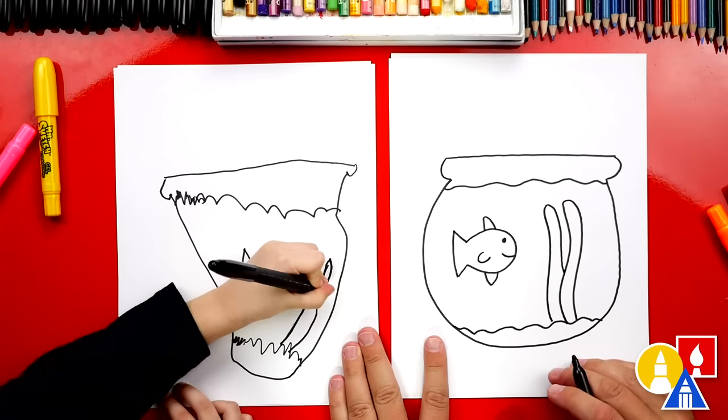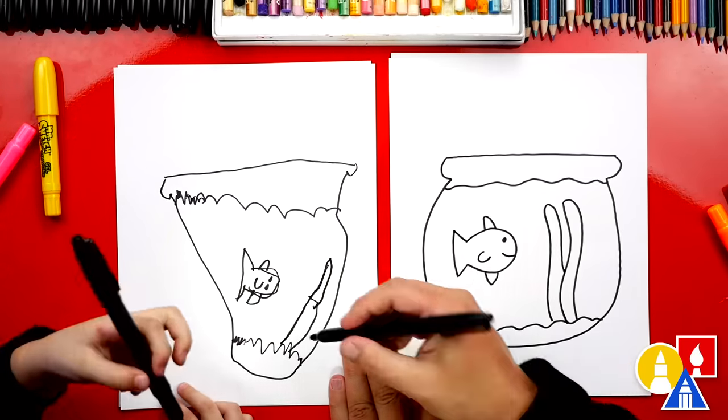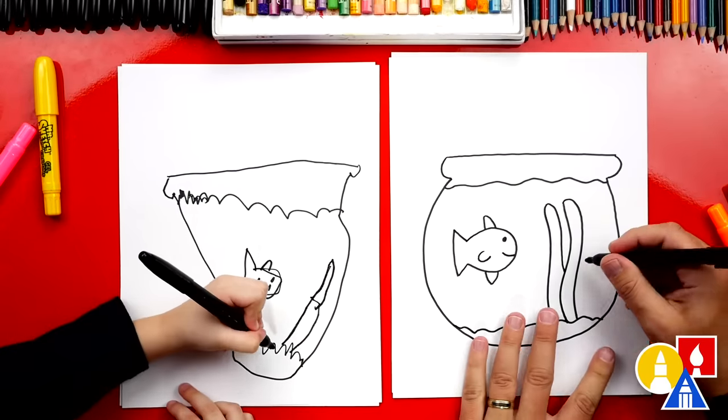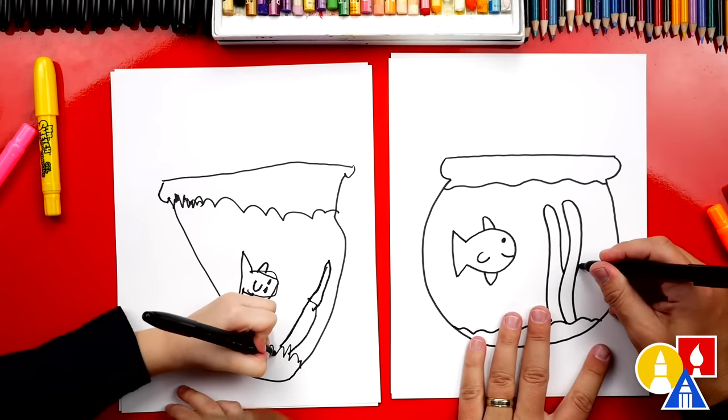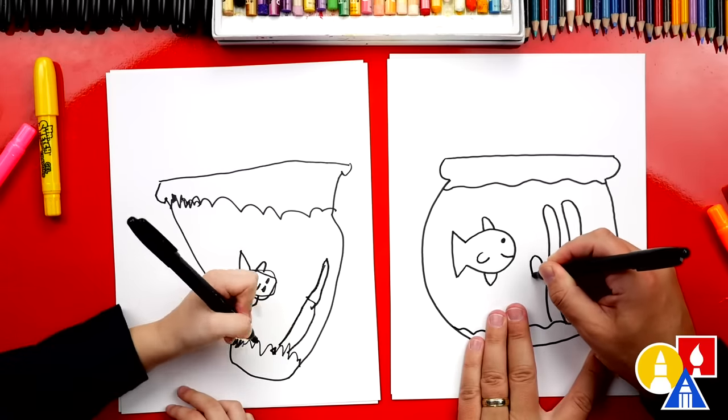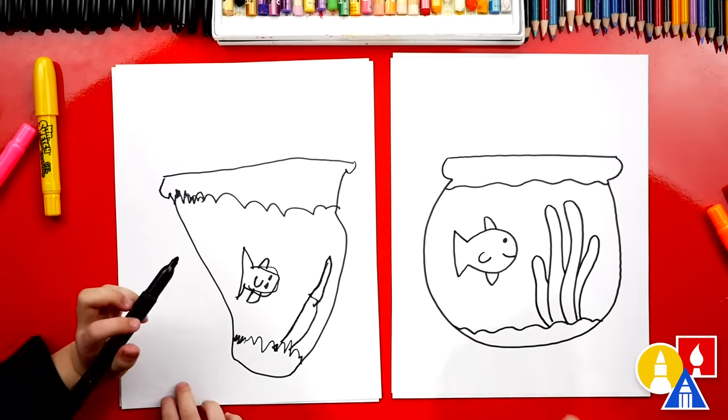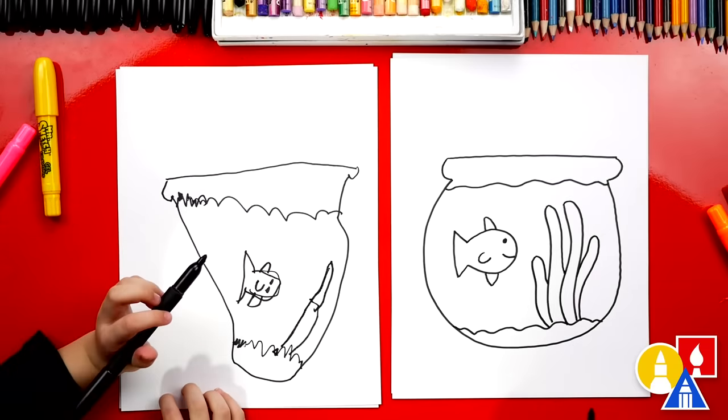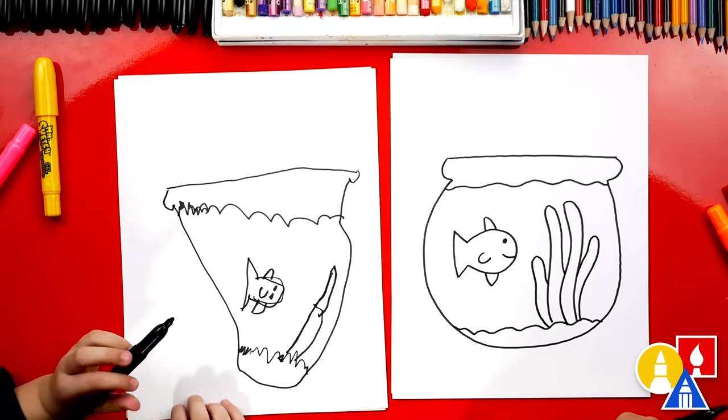There you go. Like a little bit taller. A little bit taller and then come back down. You could even draw another one that's shorter there. I'll draw a short one on this side too. Like this and maybe another one. Yeah, that's really short. And I'll draw another one. Or you could add different colors to the seaweed too.